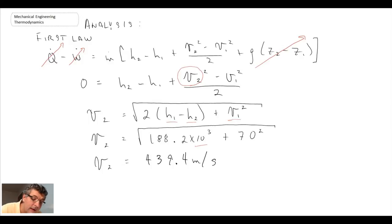And what we get is the exit velocity, 439.4 meters per second. Let's move on and take a look at the isentropic efficiency.